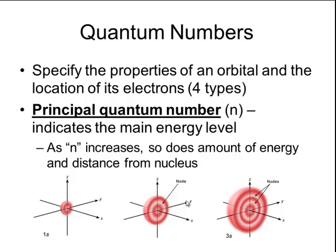The first type is called a principal quantum number. The principal quantum number indicates the main energy level of an electron. These were actually first proposed by Niels Bohr. Remember that electrons can move between different orbits from their ground state to these excited states. And he represented those energy levels as n equals 1 or n equals 2. And that n represented the principal quantum number. As n increases, or as the principal quantum number increases, so does the amount of energy and distance from the nucleus.